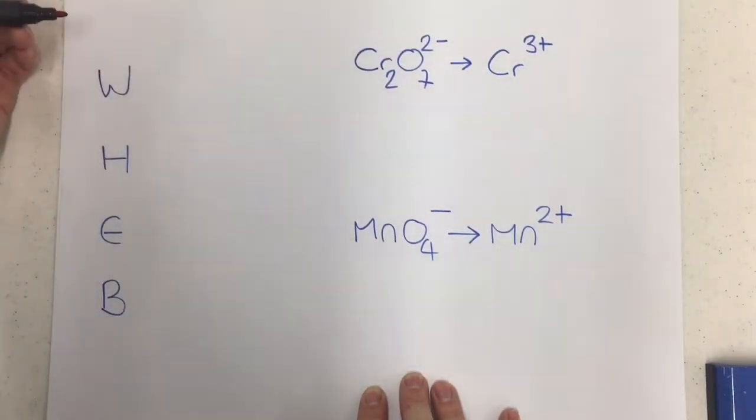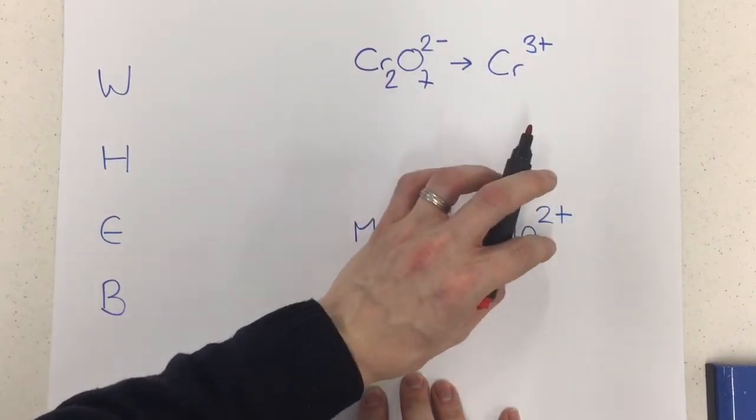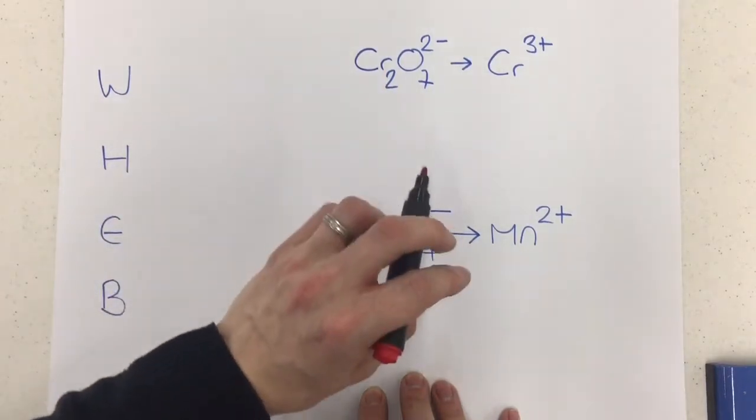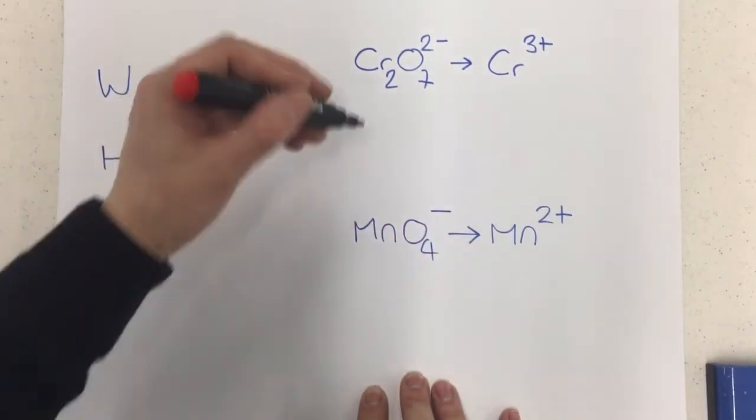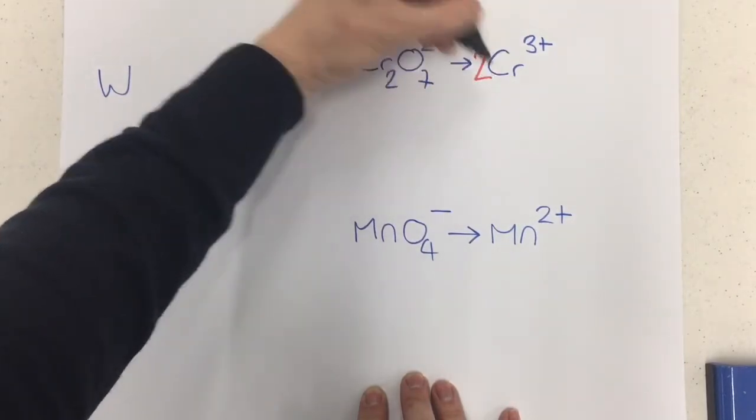So let's have a look first off with this one. Now we're going to use dichromate Cr2O7^2- going over to chromium 3+ ions and before I go any further, before I even introduce myself to this, I need to make sure the element undergoing redox is balanced and so the chromium, I've got two here, I've only got one there, I'm going to introduce the two.